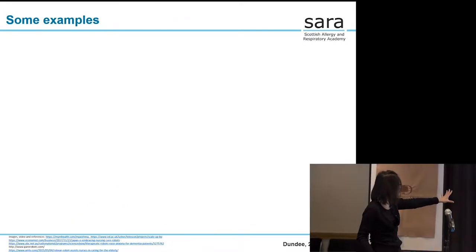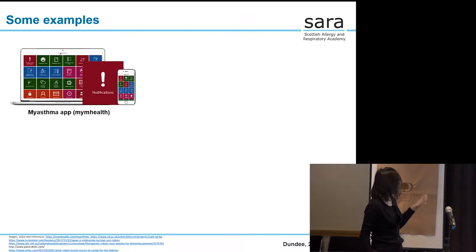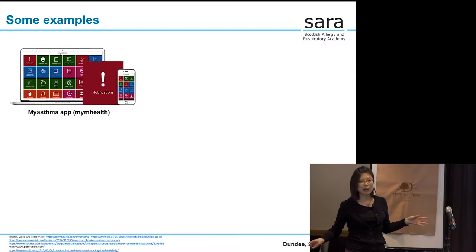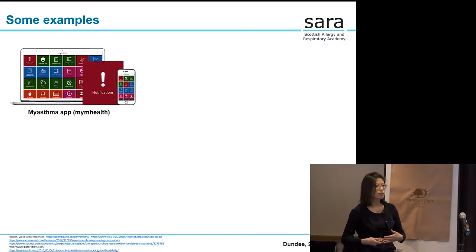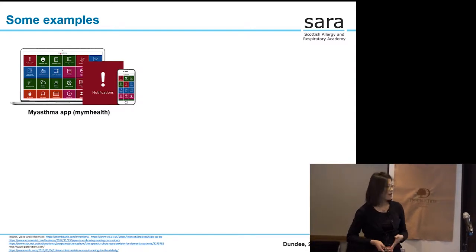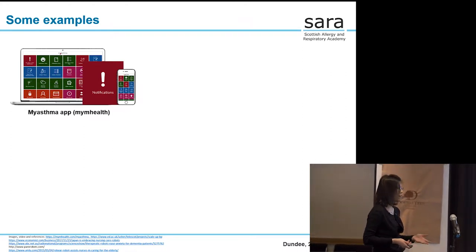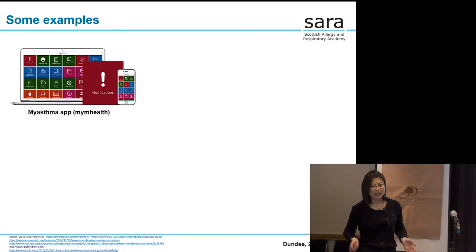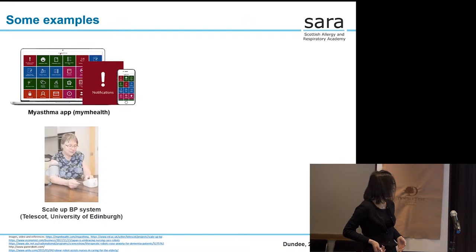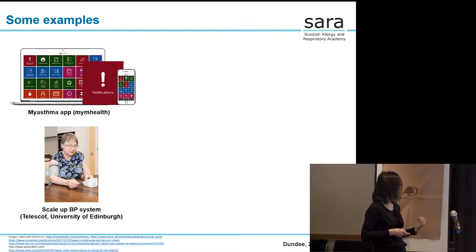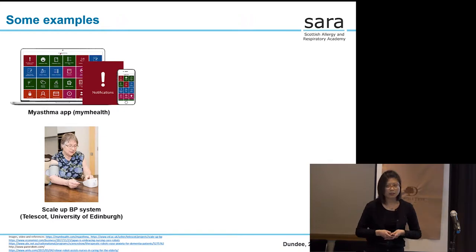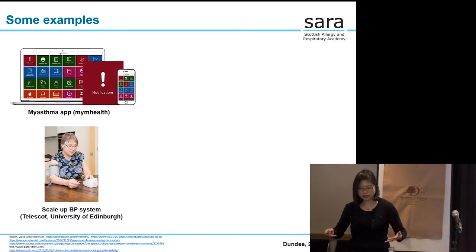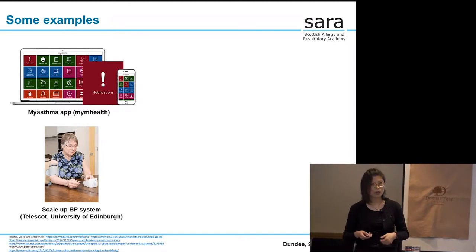Under telehealth and telemedicine we have e-health and m-health. E-health refers to using computers to deliver healthcare services, while m-health specifically looks at mobile devices like your phone or tablet. Today we focus on telehealth. One example is the 'My Asthma' app developed by a company called myMhealth, for patients to self-manage asthma.